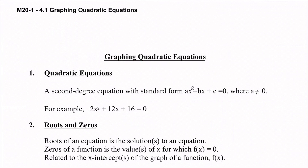Pretty much everything we're going to do is going to deal with our calculator. For a quadratic equation — we've already looked at quadratic functions — a quadratic equation is a second degree equation, and in standard form it looks like this: ax squared plus bx plus c equals zero. Before, when we had a quadratic function, it was y equals ax squared plus bx plus c. Now it's just an equation with everything on one side and zero on the other.